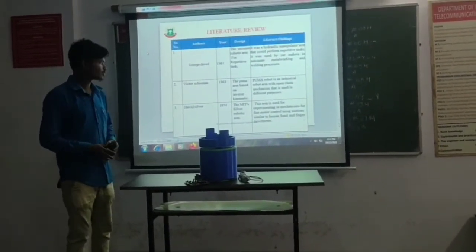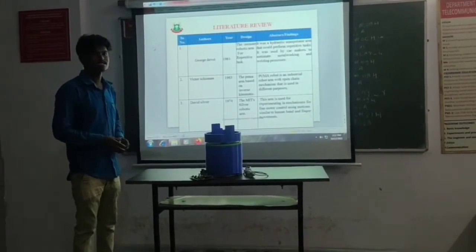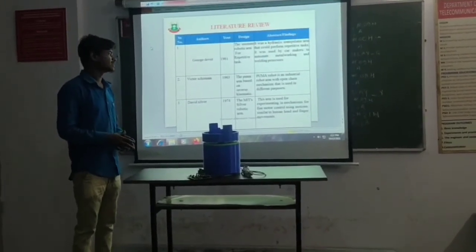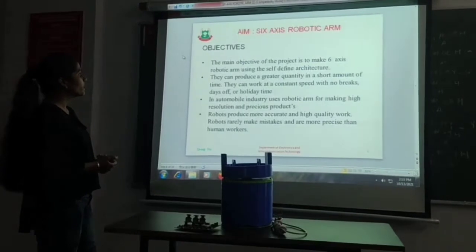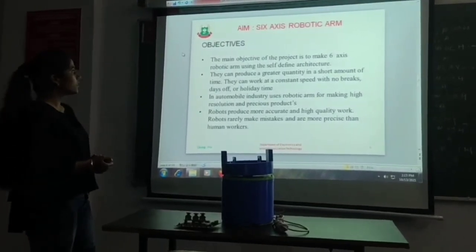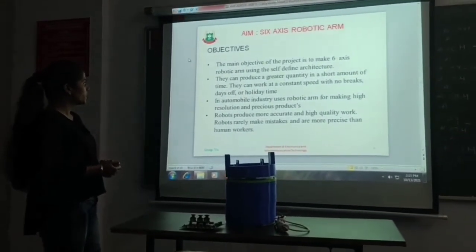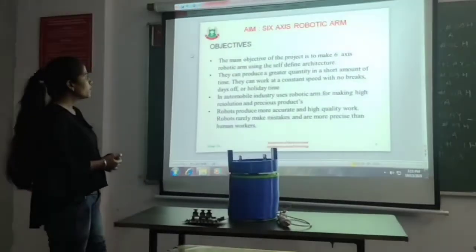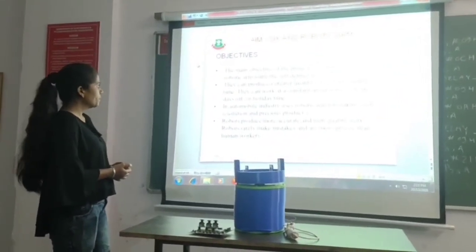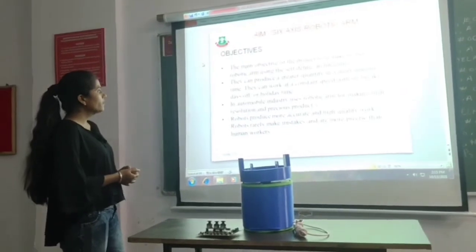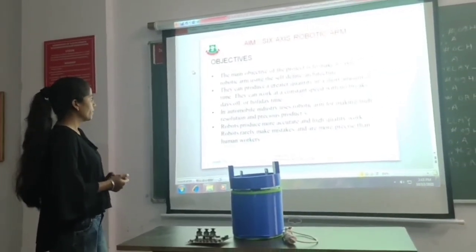A 6-axis robotic arm was designed in the X-axis robotic arm in 1974. They produce better quality in both short and long-term style. They work at a constant speed with no placebo effect for a connection.